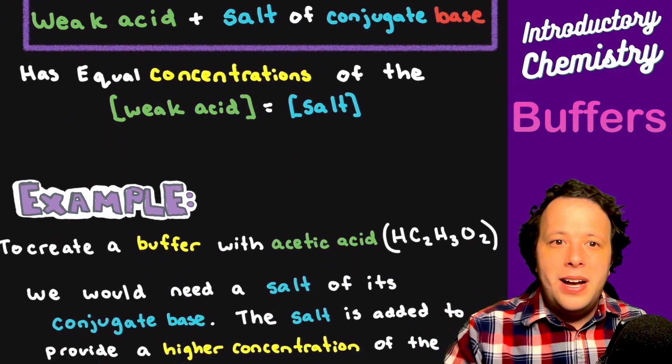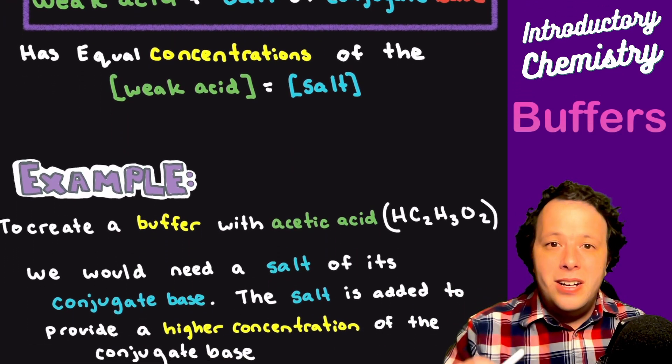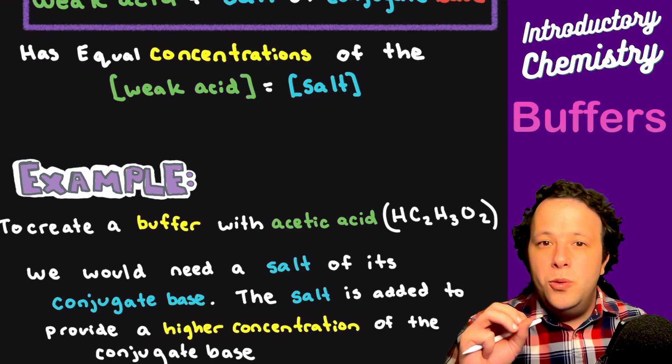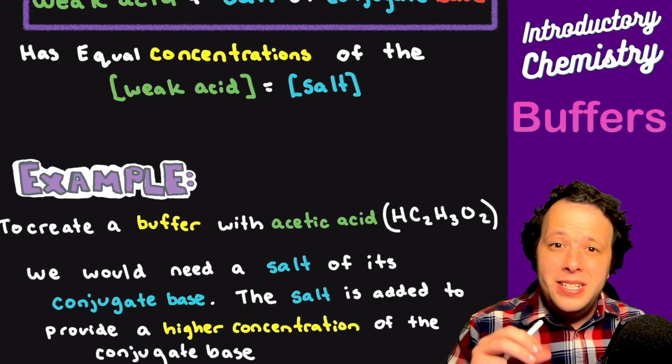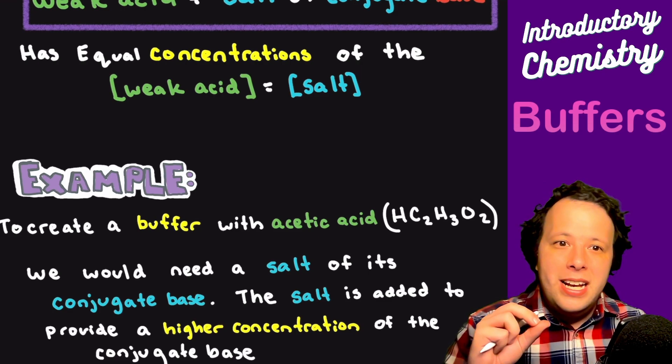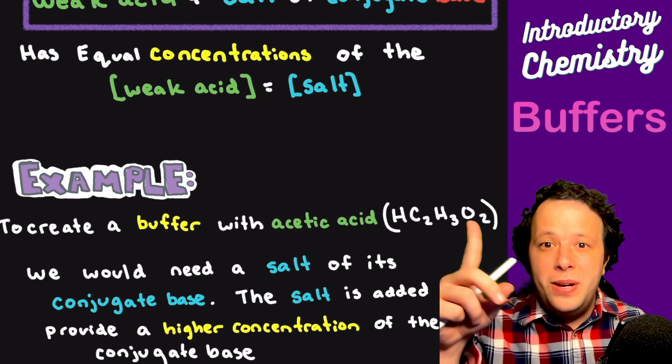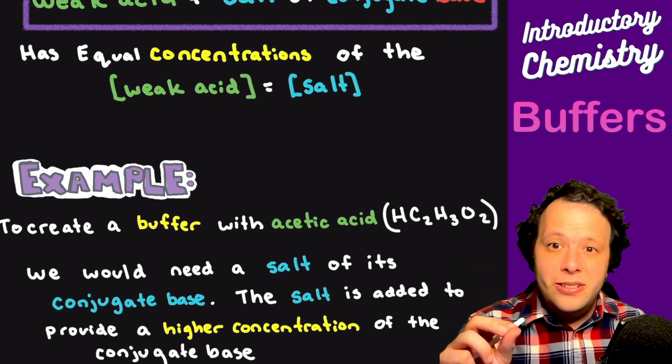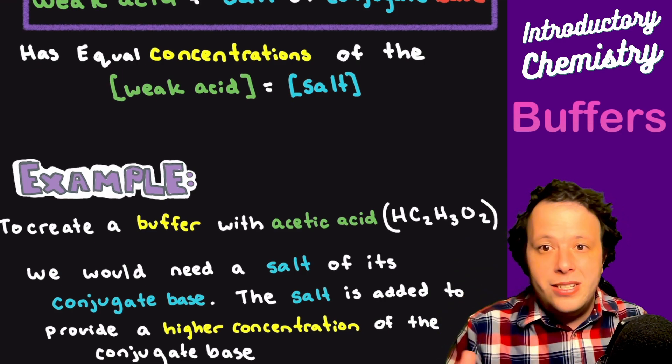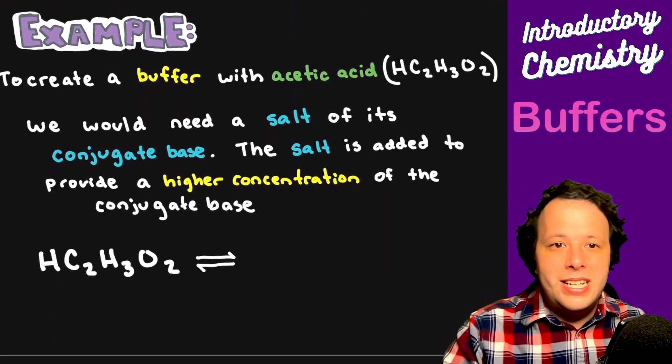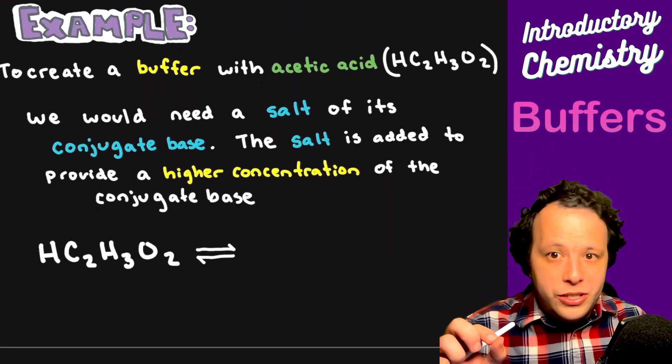If I want to create a buffer of acetic acid, we would need a salt of its conjugate base. The salt is added to provide a higher concentration of the conjugate base, because if you add just acetic acid into solution, it barely dissociates. So it's not going to have a lot of it in there. Let's try to understand how we pick which salt we have.